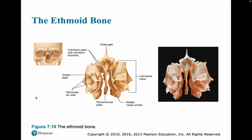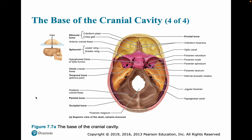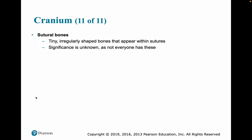Here is our ethmoid bone. Sutural bones are tiny, irregular-shaped bones that appear within sutures. We don't really know what their significance is. Not everyone has sutural bones — we have three or four skulls in the lab and some of them do have sutural bones, but not all.